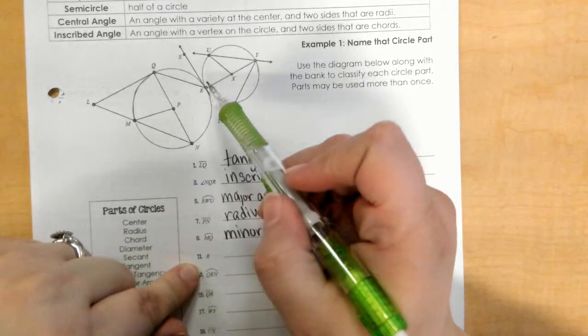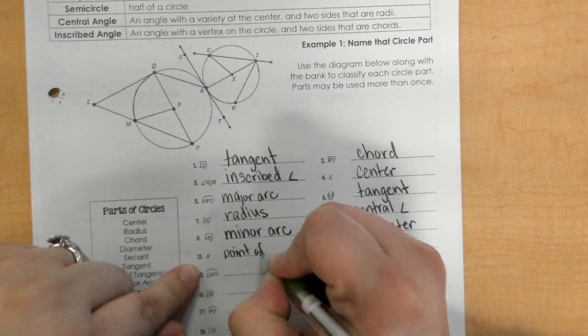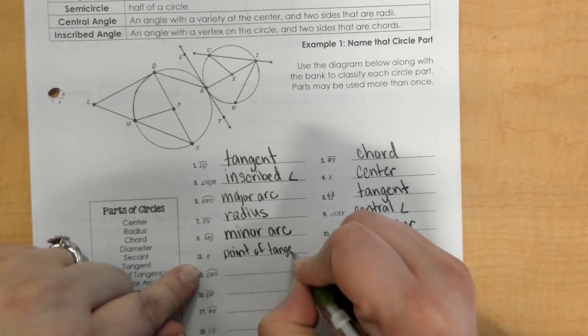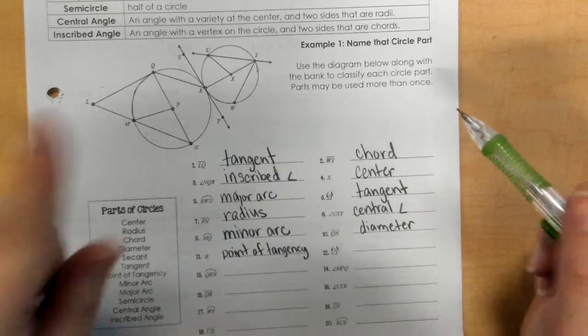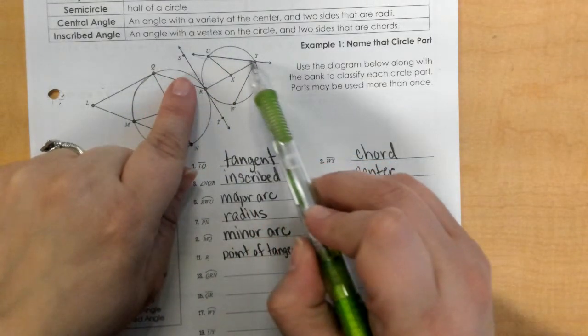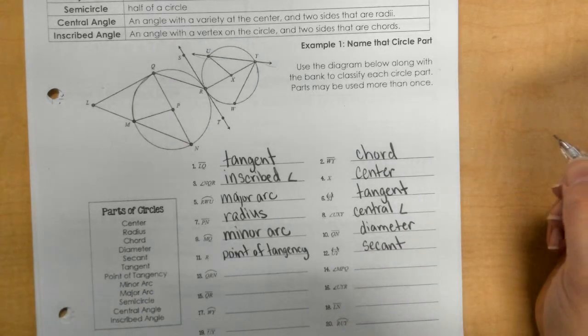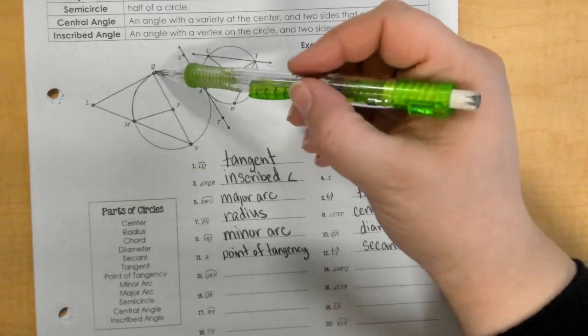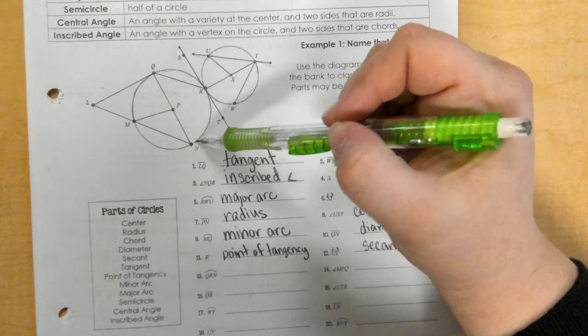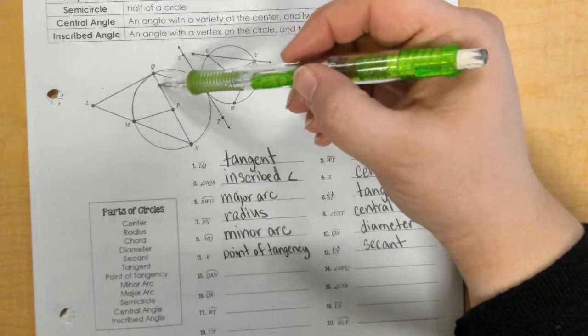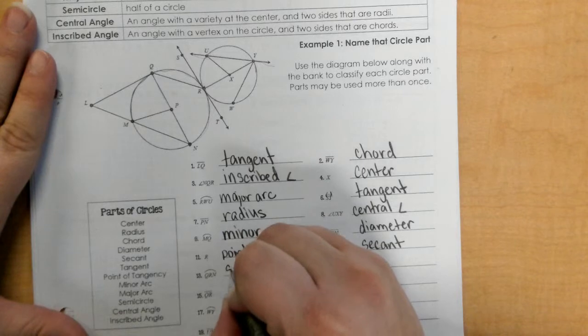Point R, point R is the point of tangency. Okay, number 12, line UY, that is a secant. Okay, arc QRN, so here's Q, R, N, and that is half my circle because I know this is my diameter. So it went from one point of the diameter to the other point of the diameter. So that is a semicircle.